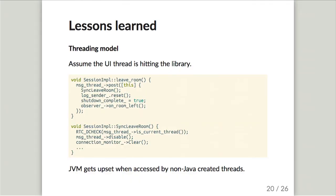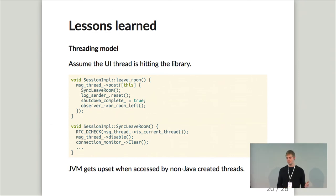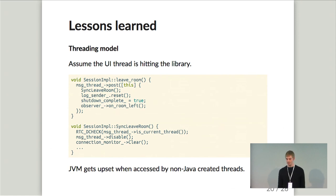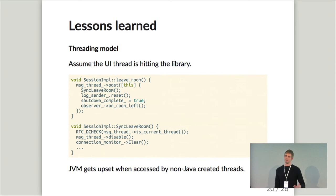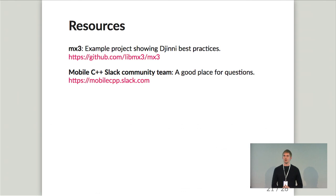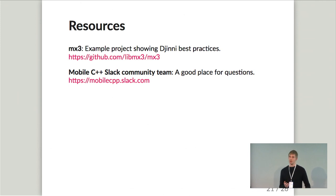Another lesson learned is around threading models. Always assume that the UI thread is hitting the library. We ended up deciding to make all methods async, just to make the threading model easier — so every method call into the library just posts to a background thread. Another threading tip: the JVM gets upset when it's accessed by non-Java-created threads. So you need to provide a mechanism for C++ to create Java threads whenever those are going to be calling back into Java land. Djinni has a project called MX3, which is great for showing best practices — they have good implementations of useful objects like a thread launcher that handles creating platform threads, and UI thread event loops for posting back to the platform UI threads.